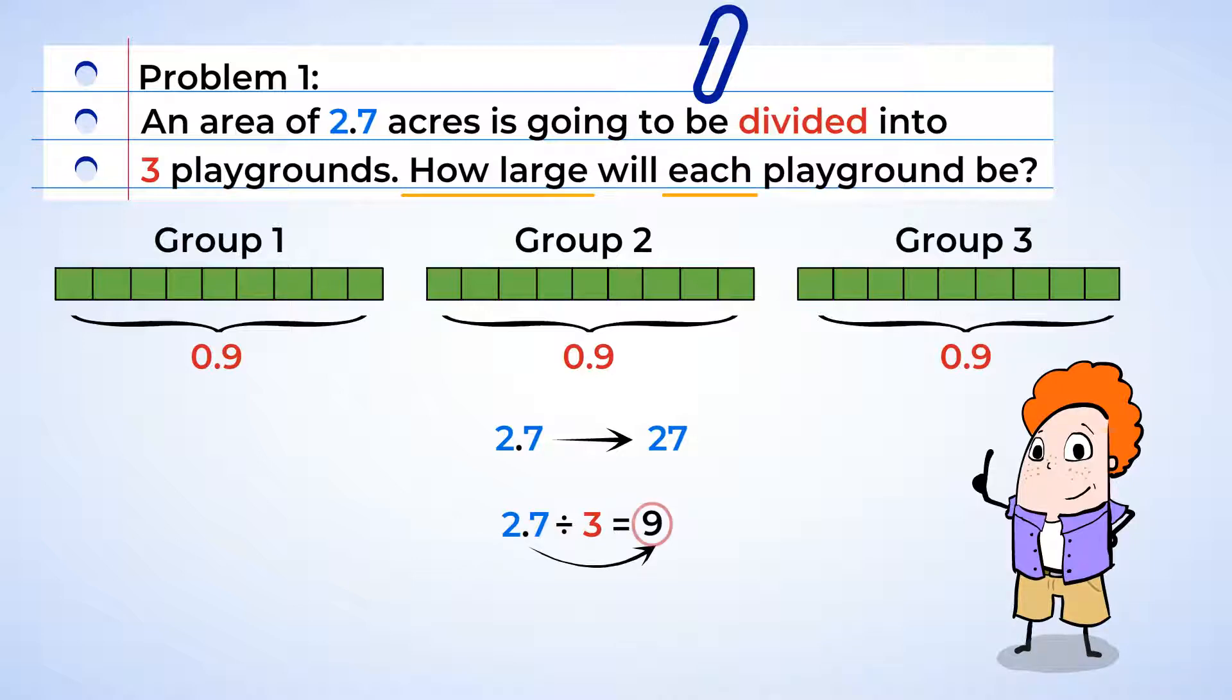Move the decimal over one place to the left. And now, nine becomes nine tenths. What a neat relationship of decimals we've just discovered. Way to go.